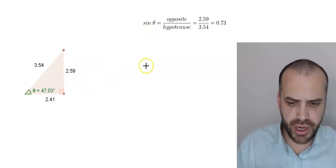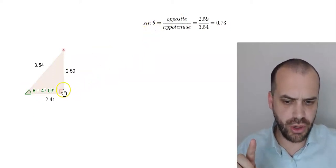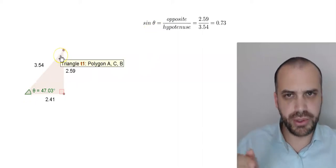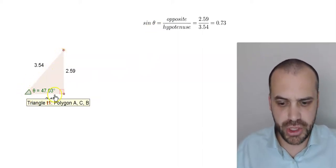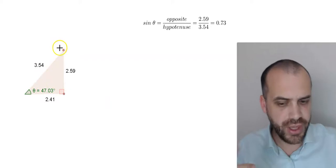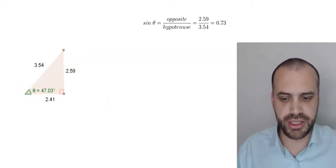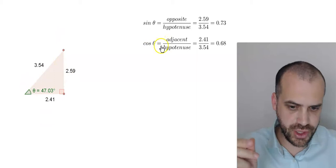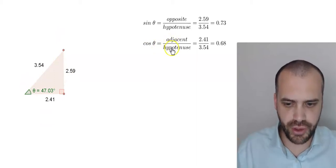And we actually have two more ratios because this is a ratio between the opposite and the hypotenuse, but we can also have a ratio between the adjacent and the hypotenuse, and a ratio between the opposite and the adjacent. Here's a second formula: cos theta equals adjacent over hypotenuse.